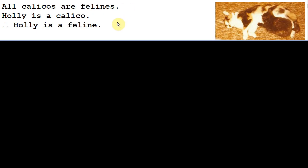Let's consider this argument here. It says, all calicos are felines, Holly is a calico, therefore Holly is a feline. This is a valid argument. Just examine it a little bit and you can see that it is valid.